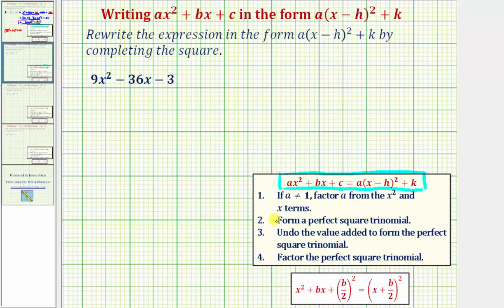To do this, we'll follow these four steps. Step one, if a, the coefficient of x², is not one, we'll factor a from the x² and x terms. Notice here, a equals nine, which means we'll factor nine from 9x² - 36x.